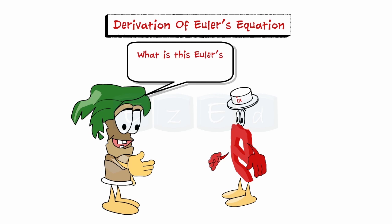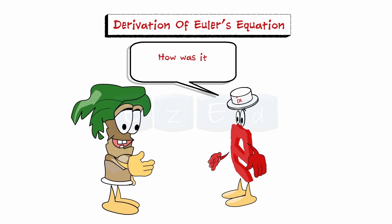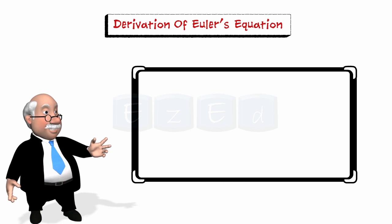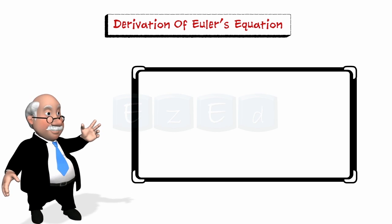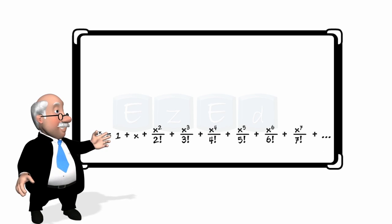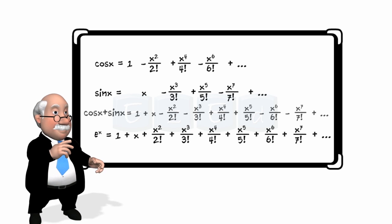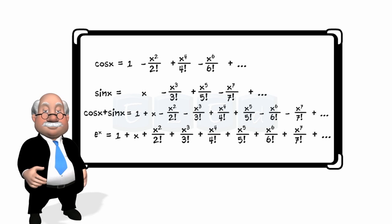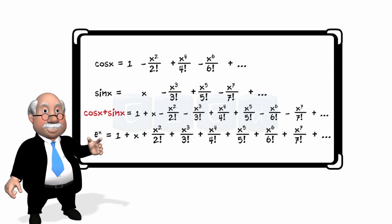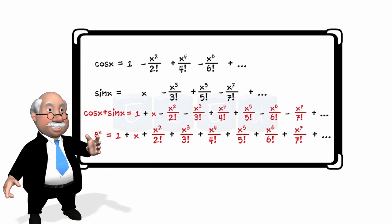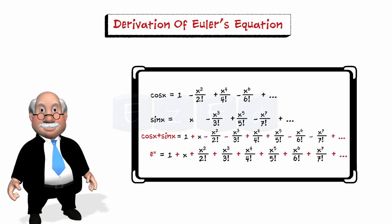What is Euler's equation? How was it discovered? First, take a look at the series expansion of the exponential function e^x and the trigonometric functions sine x and cosine x and their addition. Compare cos x plus sine x with e^x — they are almost identical; all terms in the series are exactly the same except for signs.